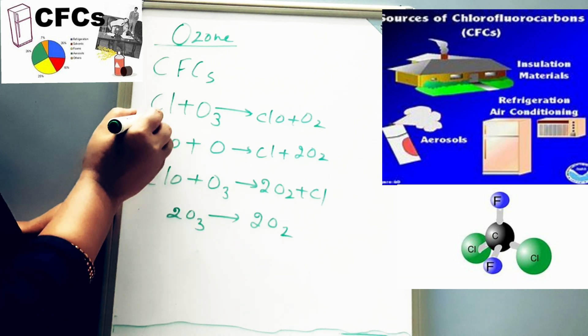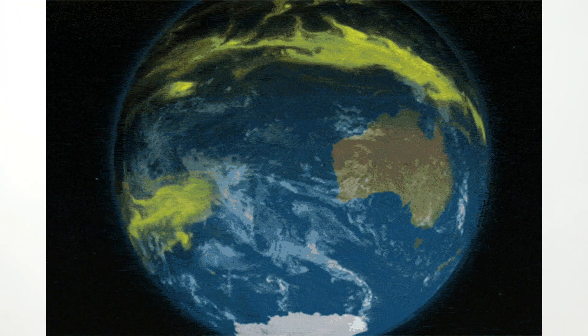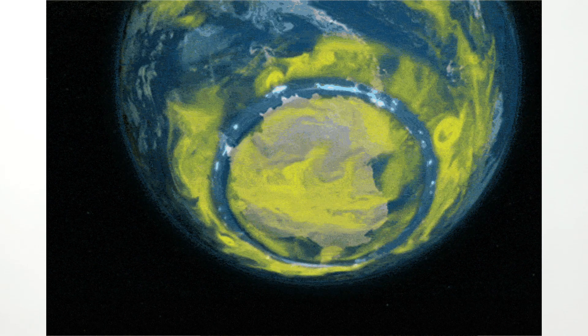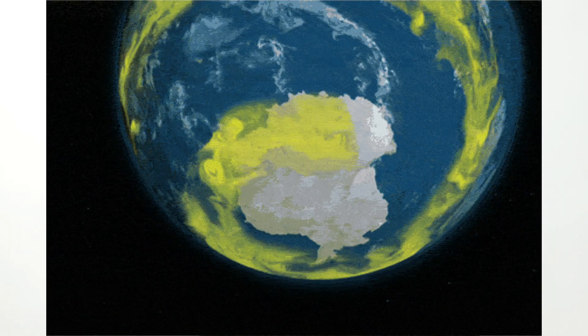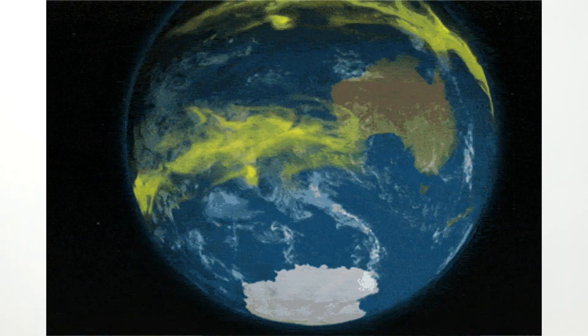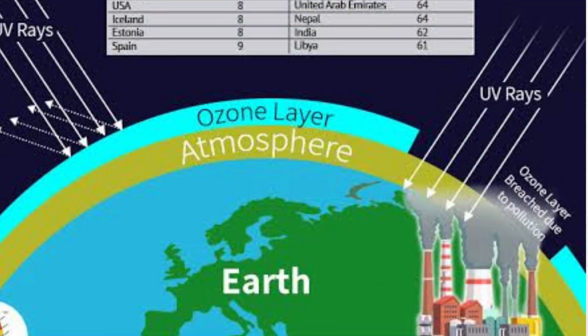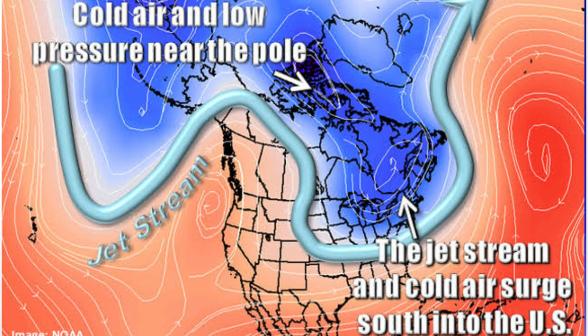As ozone depletes in the stratosphere, it forms a hole. In 1985, a seasonal depletion in the layer of ozone was found above Antarctica. This hole allowed harmful ultraviolet radiation to enter Earth's atmosphere in the southern hemisphere.